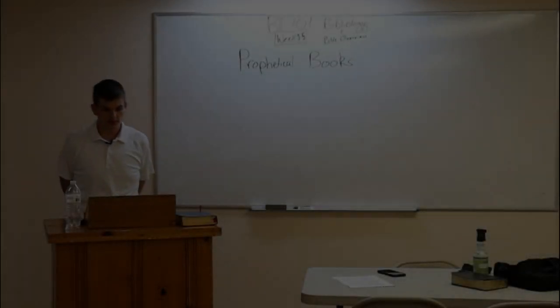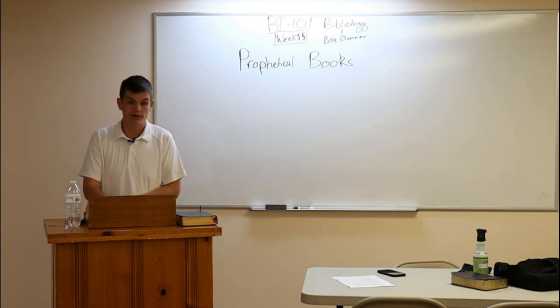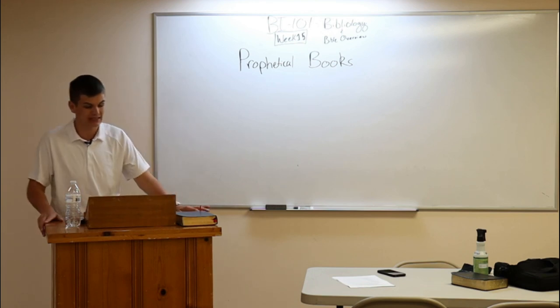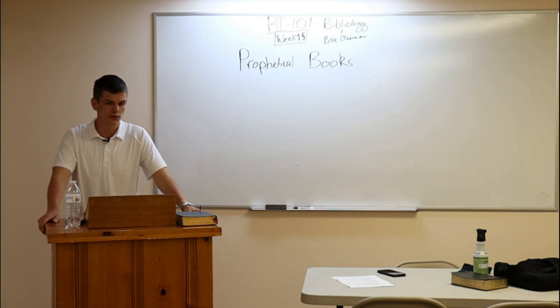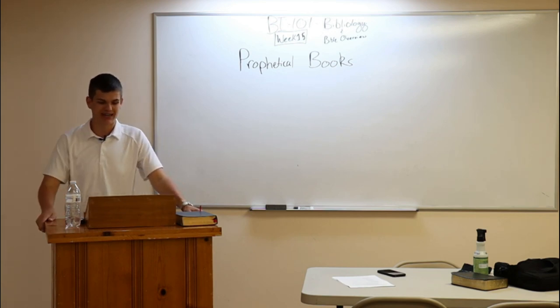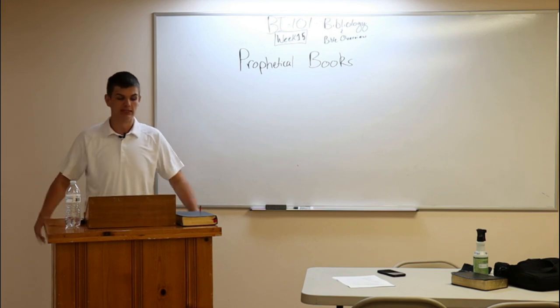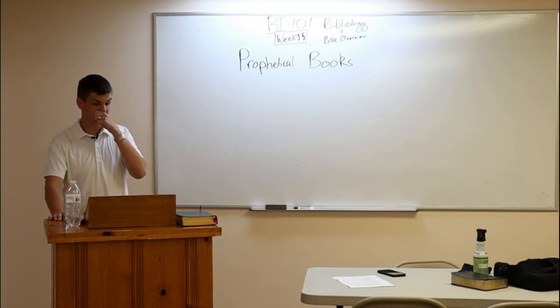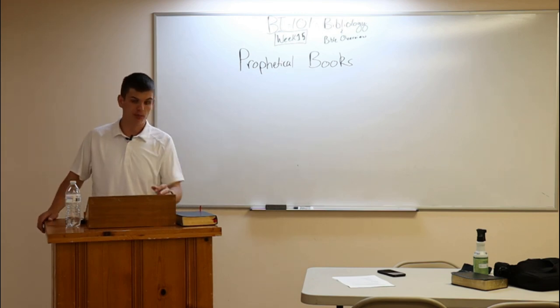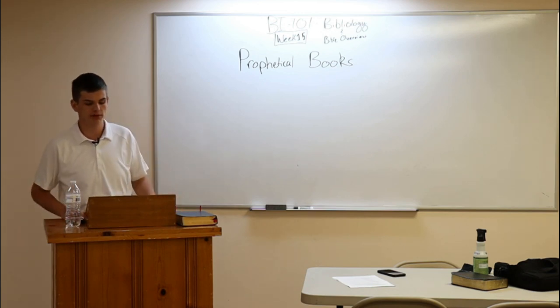All right, good evening and welcome to lesson number 15 in Bibliology and Bible Overview taught by the New Covenant College here at the Institute of the New Testament Baptist Church of Dover, Tennessee. Last time we met together, we looked at an overview of the poetical books, and now we're going to round out the Old Testament and finish it up tonight as we will consider for our last section the prophetical books. This portion includes all books from Isaiah to Malachi, the rest of the Old Testament.